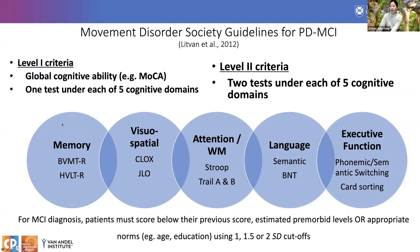The criteria has two levels: an abbreviated level one with global cognitive assessments administered in a short time, and a comprehensive level two assessing at least two tests per cognitive domain, including memory, visuospatial, attention and working memory, language, and executive function. MCI is diagnosed when patients score below their estimated premorbid levels using one to two standard deviation cutoffs. The MCI diagnosis is met if patients fail two tests under each of the five cognitive domains, regardless of whether they fail from one domain or across different domains.